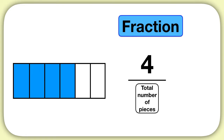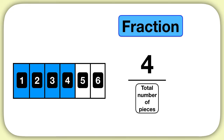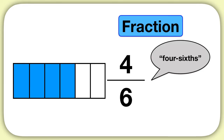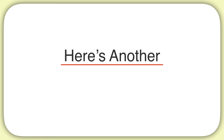Remember that the number on the bottom is the total number of pieces in the shape. How many total pieces are in this rectangle? You can see 1, 2, 3, 4, 5, 6 pieces make the entire rectangle, so we put the number 6 below the line. Now that I have my fraction, how can I read this fraction? We say this fraction as 4 sixths.